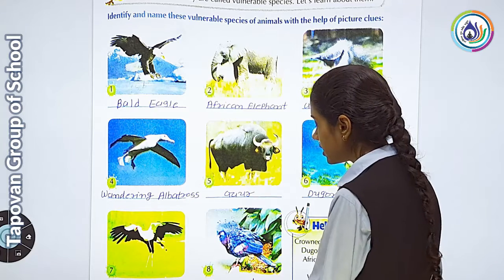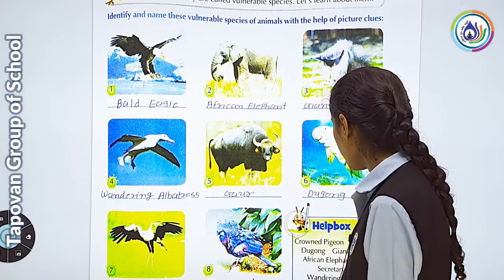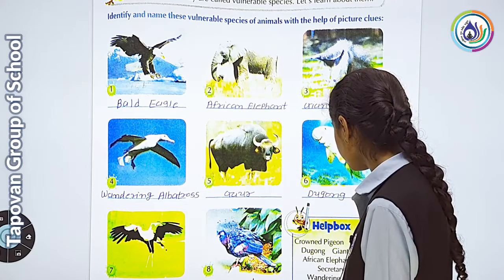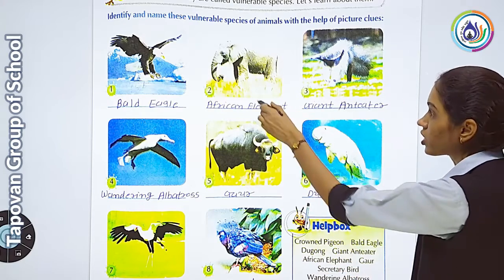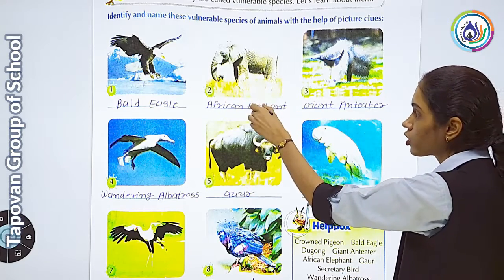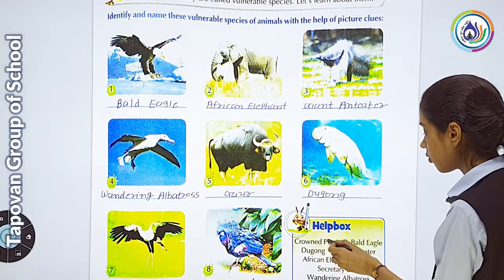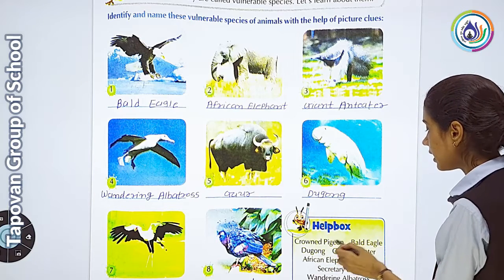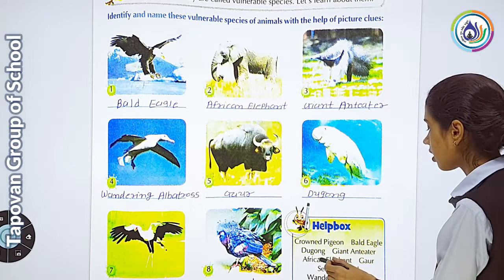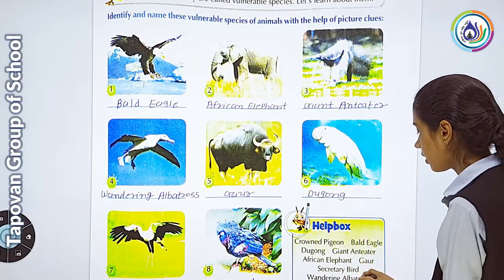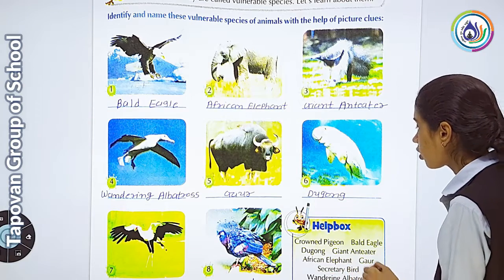The fifth is Crowned Pigeon — P-I-G-E-O-N, Crowned Pigeon. Here you can see different types of animal and bird pictures. The options given are: Crowned Pigeon, Bald Eagle, Dodo, Giant Anteater, African Elephant, Roar, Secretary Bird, and Wandering Albatross.